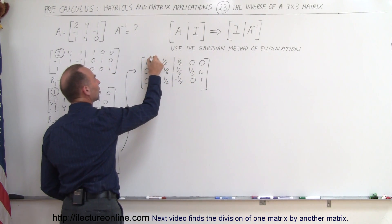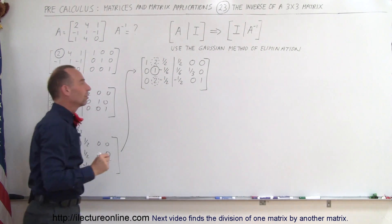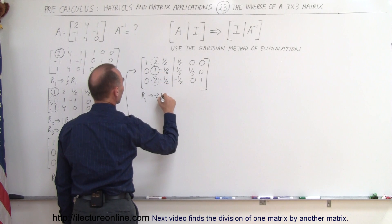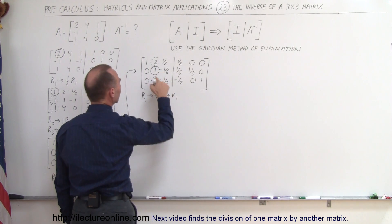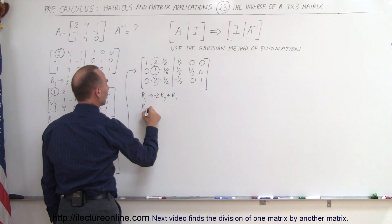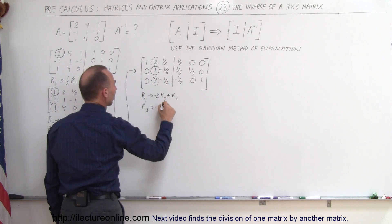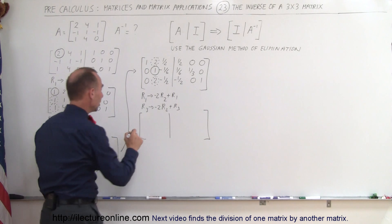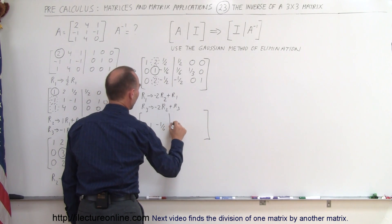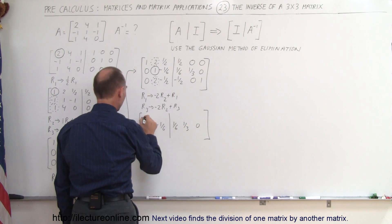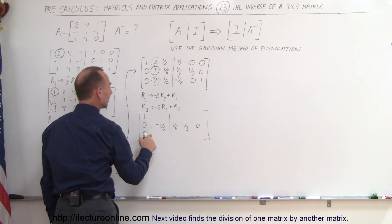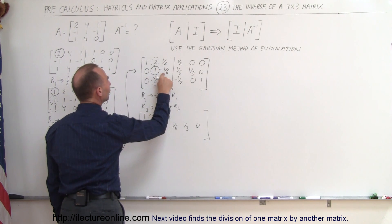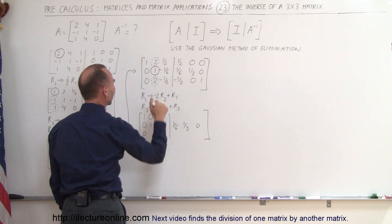Now we have a 1 in the second pivot position, which allows us to turn the entries above and below it into 0s. We take the first row and replace it by adding negative 2 times row 2 to it, and the third row by adding negative 2 times row 2 to it. For the first row: negative 2 times 1 is negative 2, added to 2 is 0. Negative 2 times negative one sixth gives positive one third, added to one half gives five sixths.